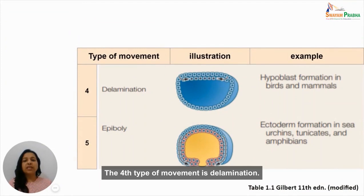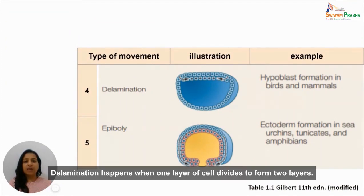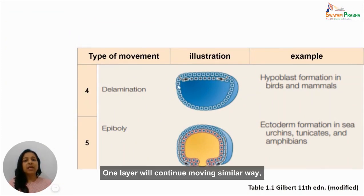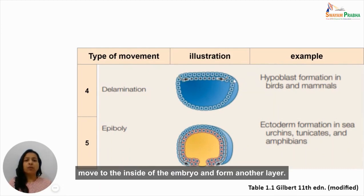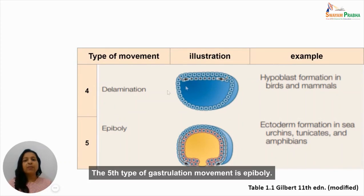The fourth type of movement is delamination. Delamination happens when one layer of cells divides to form two layers: one layer continues moving similarly while the other moves to the inside of the embryo to form another layer. Delamination happens during hypoblast formation in birds and mammals.